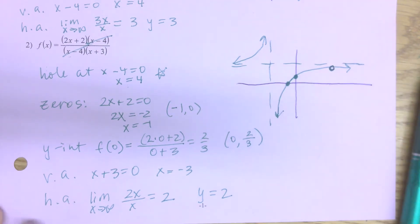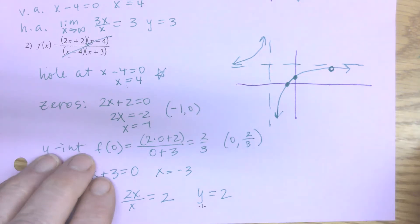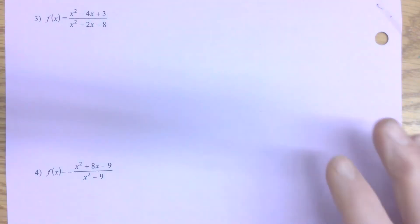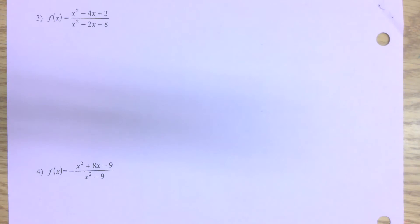Go ahead and pause the video and see if you can find all the pieces on the next one, then come back and we'll put it all together. On this next problem you're going to end up finding two vertical asymptotes and two zeros. You'll have to factor and then revisit when you finish.